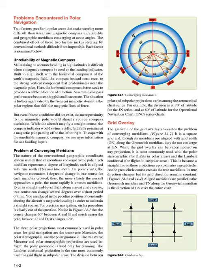Unreliability of magnetic compass. Maintaining an accurate heading in high latitudes is difficult when a magnetic compass is used as the heading indicator. Built to align itself with the horizontal component of the Earth's magnetic field, the compass instead must react to the strong vertical component that predominates near the magnetic poles. Here, the horizontal component is too weak to provide a reliable indication of direction. As a result, compass performance becomes sluggish and inaccurate. The situation is further aggravated by the frequent magnetic storms in the polar regions that shift the magnetic lines of force.